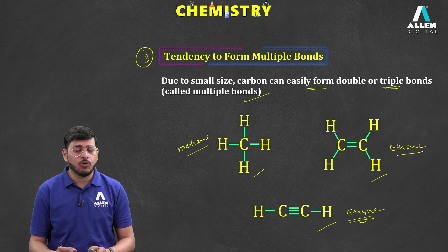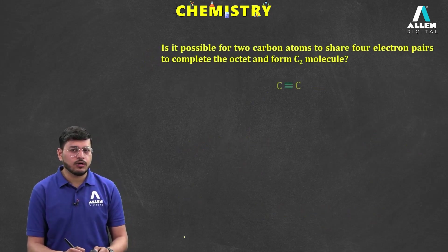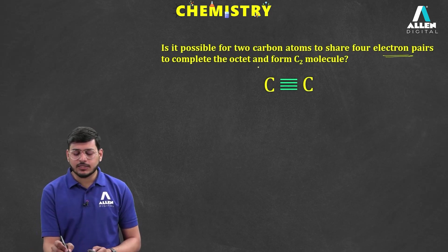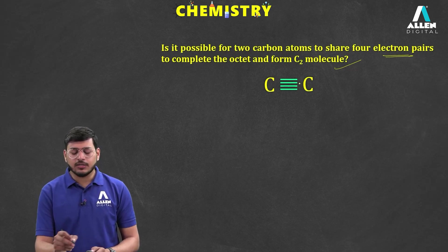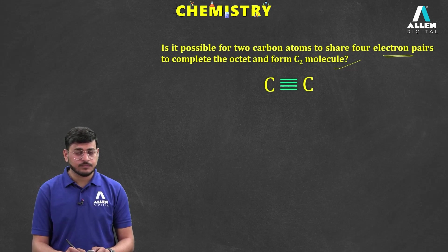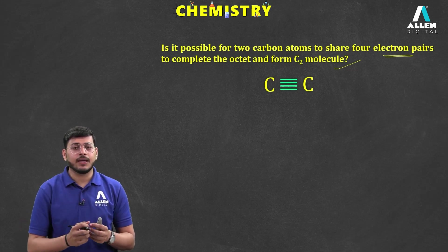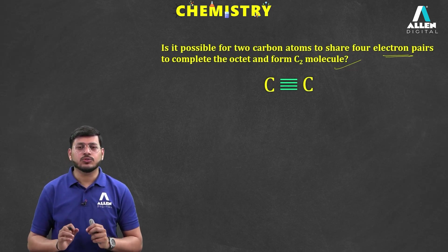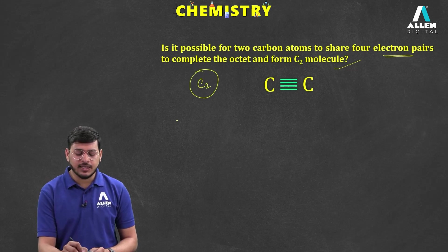Now, a question arises: can carbon form four bonds with another carbon atom to complete the octet and form a C2 molecule? Have you ever seen a C2 molecule? Carbon cannot share four bonds with another carbon atom. Although carbon has a valency of four, it can combine by forming up to three bonds, but C2 molecule is not possible. N2, formed with a triple bond, you have seen — but not C2.